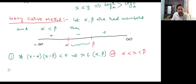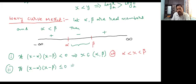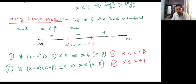Students, have you understood how I am writing? If (x minus alpha) into (x minus beta) is less than or equal to zero — equality symbol is there — so we get closed interval [alpha, beta]. We can write another way also: alpha less than or equal to x less than or equal to beta.